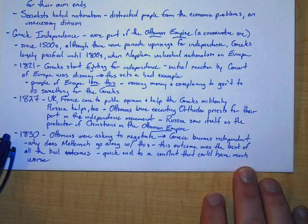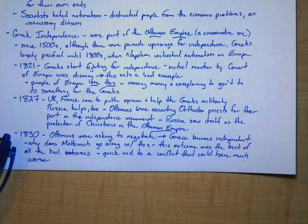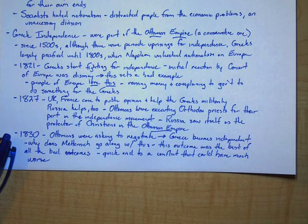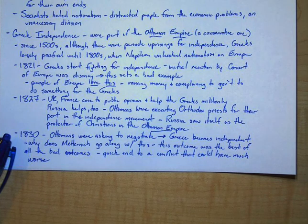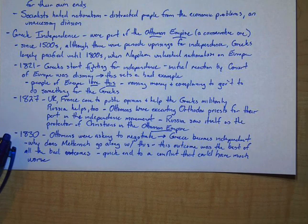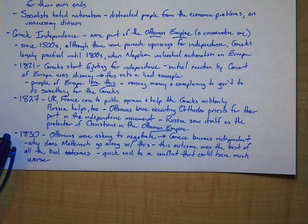And so the Ottomans are going to be okay without Greece. We've let everybody be happy for a little while, and we've given the Greeks independence. We have another player on the board that Metternich can try to control. So all in all, it's not the worst outcome. Obviously, the best outcome would have been if this had never happened, but Metternich couldn't control that. So this was the next best thing. A quick end to the conflict.